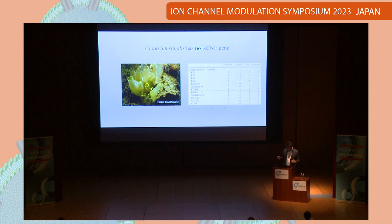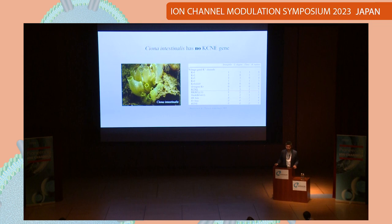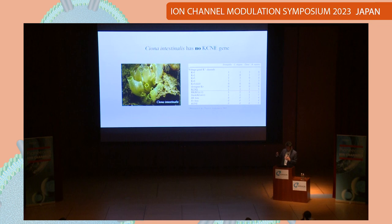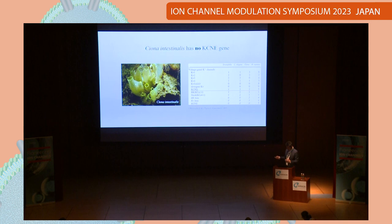Before going to this question, I'd like to introduce some brief history. Almost two decades ago, the genome of Ciona intestinalis — a very cool marine invertebrate — had just been published. Some Japanese ion channel researchers tried to make a catalog, a project led by Professor Okamura, and I also contributed. We tried to catalog the ion channels of Ciona intestinalis.